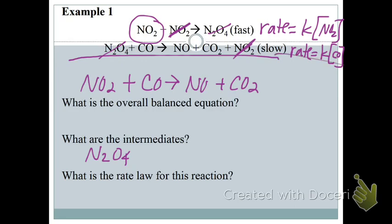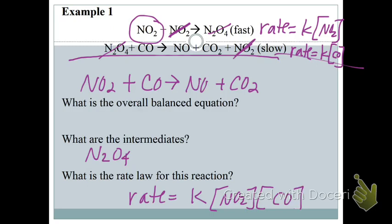The overall rate law is rate = k[NO₂][CO]. We don't add the rate and K separately — a rate law is always rate = K times concentrations. We're really only adding the concentrations. This one happens to match the balanced equation, but that's not always the case, depending on where your slow step is.